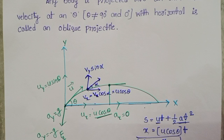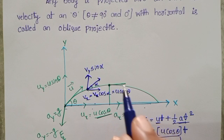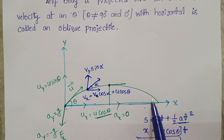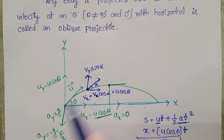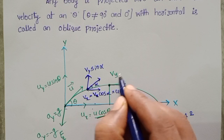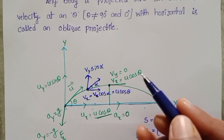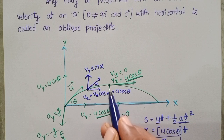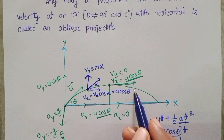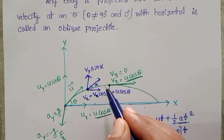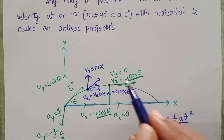In one-dimensional motion, velocity equals zero at maximum height. But students, don't confuse here — in projectile motion, velocity is not zero at maximum height. If velocity were zero, the object would move straight down. Since it follows a parabolic path, velocity cannot be zero. At maximum height, vertical velocity is zero, but the horizontal component u cos theta remains constant. So velocity is minimum (only u cos theta) at maximum height, then gradually increases as the object moves downward.